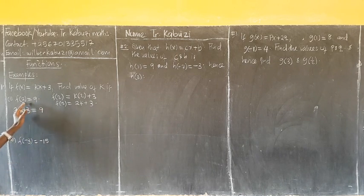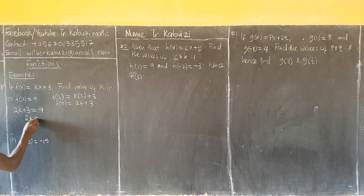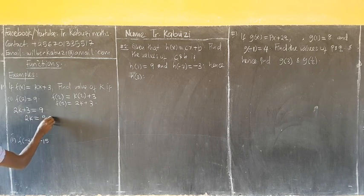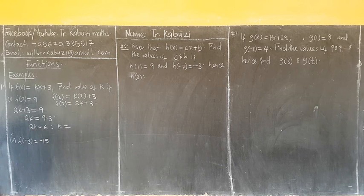From here, I just put here. Now I take this inside and we have my 2k equal to 9 minus 3. So my 2k becomes 6. And from here, my k divided by 2 becomes 3. And from here, after finding the value of k...